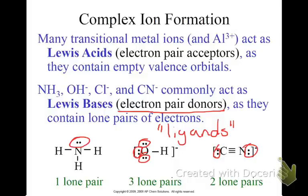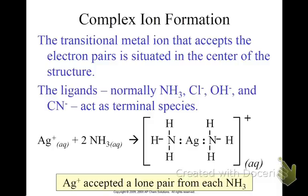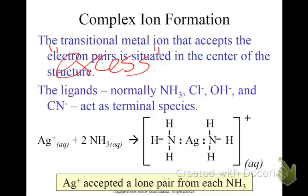Ligands are the ones that surround the central atom, that surround the Lewis acid. This type of reaction does not happen very easily. If you look at Ag+ and NH3, there isn't really a charge on NH3, so it's not a typical ionic bond. What causes this to happen are key words: excess or concentrated. If you see the word excess or concentrated, that's an indication a complex ion is going to form.